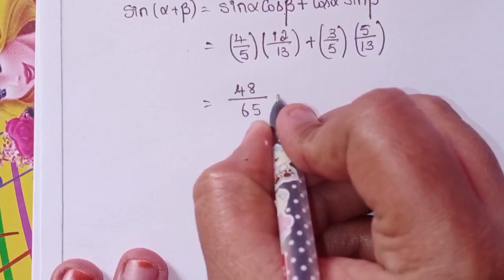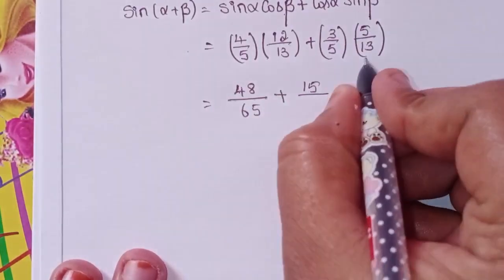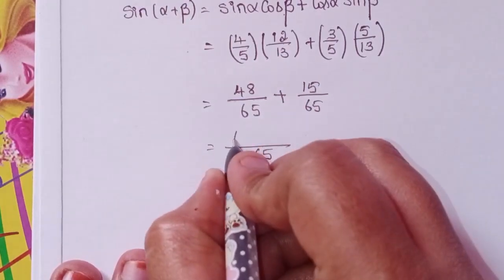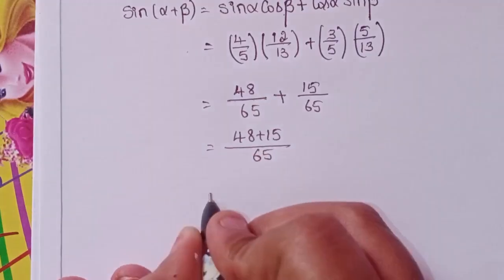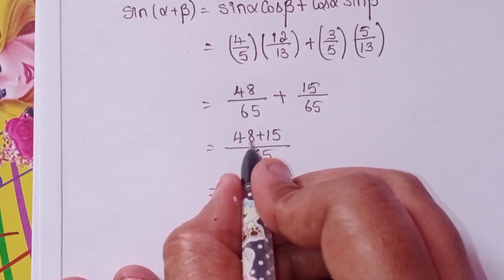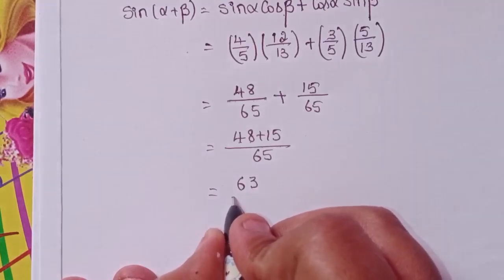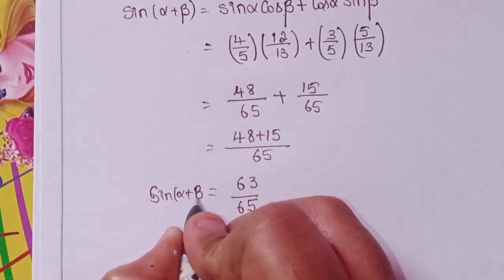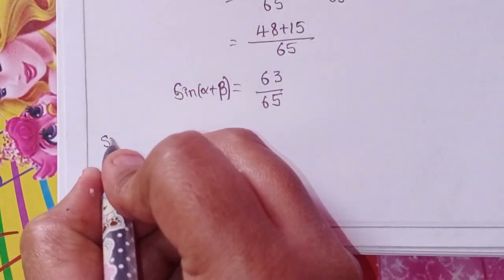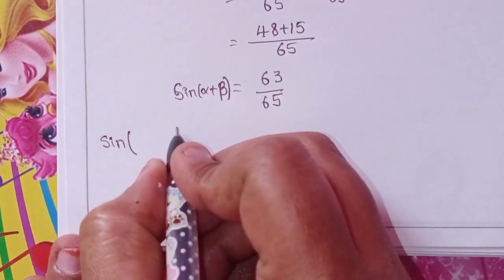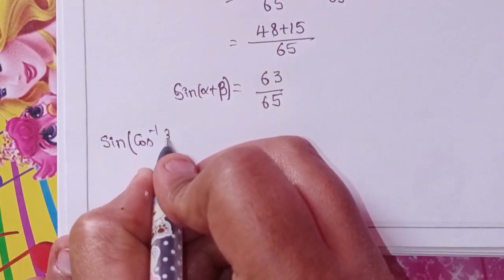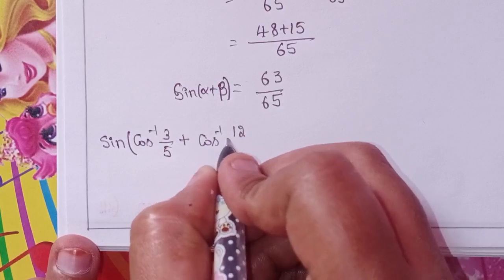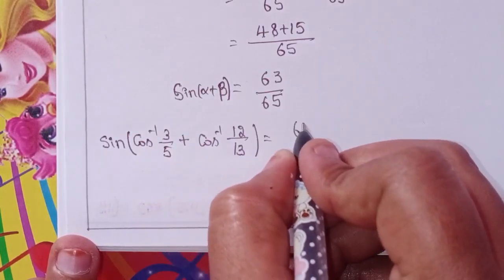The LCM is 65. So we get 48 by 65 plus 15 by 65, which equals 63 by 65. This is the value of sine of alpha plus beta, meaning sine of cos inverse 3 by 5 plus cos inverse 12 by 13 equals 63 by 65.